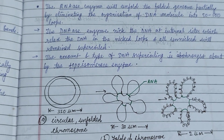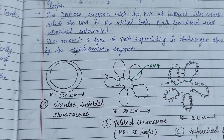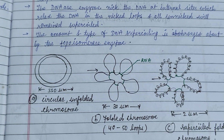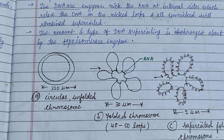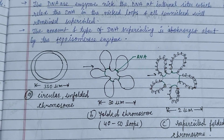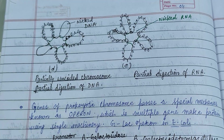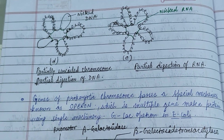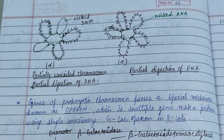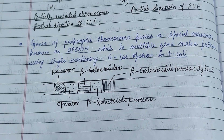In this picture, the circular unfolded chromosome is about 350 micrometers. The folded chromosome forms 40 to 50 loops from a flower-like structure. The supercoiled folded chromosome shows partial uncoiling with partial digestion of the DNA nick and partial digestion of the RNA.